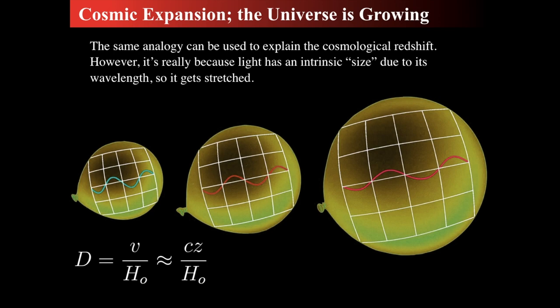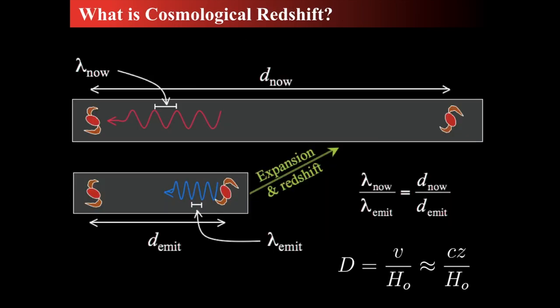As the universe grows, objects that are not gravitationally bound — like light — get stretched too. Light is not gravitationally bound to itself, so as the universe expands, its wavelength gets stretched as light travels through the cosmos. As the wave moves across the expanding surface, the ground beneath it stretches. Because light has a wavelength and nothing is holding it back, that wave gets stretched. That's what explains the cosmological redshift.